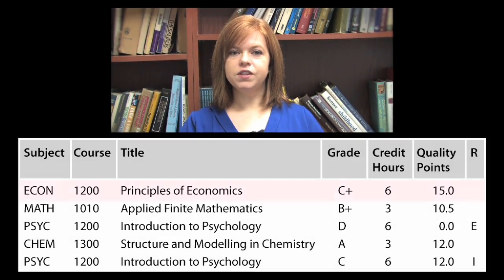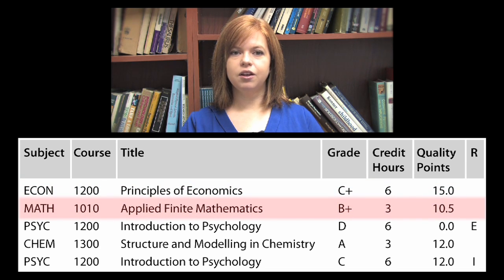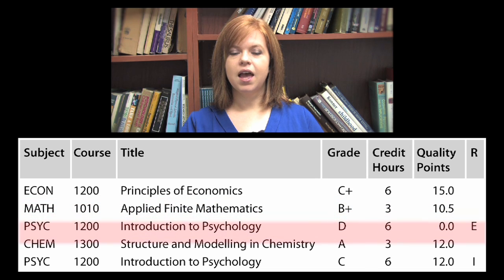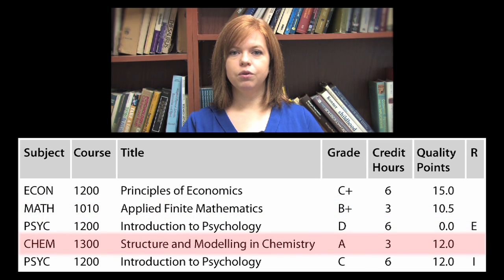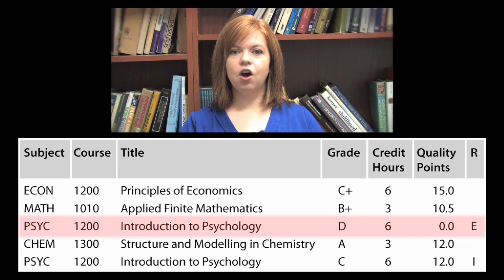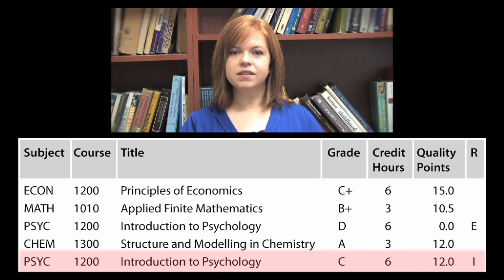Using the previous courses and grades from the How to Calculate your Cumulative GPA podcast, let's look through the GPA calculation again, but in this example we'll say that you repeated Psychology 1200. Your grades are as follows: Economics 1200 with a grade of C+, Math 1010 with a grade of B+, and Chemistry 1300 with a grade of A. You have repeated Psychology 1200, in which you originally received a grade of D. The second time you took the course, you got a grade of C.